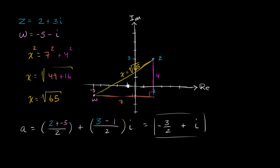If we plot it, we can verify that it makes sense. The real part is negative 3 halves, so that's negative 1 and a half, right over there. Then plus i, so it lands right over there. I didn't draw it perfectly to scale, but this makes sense — that point is indeed the midpoint between the two complex numbers.